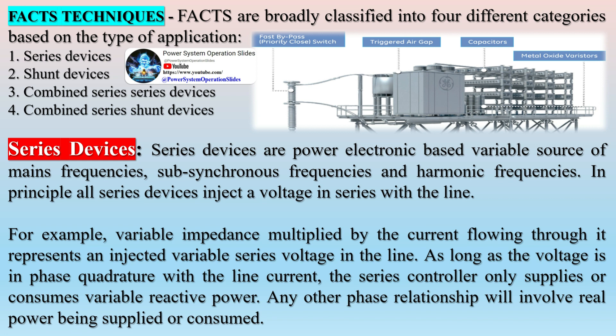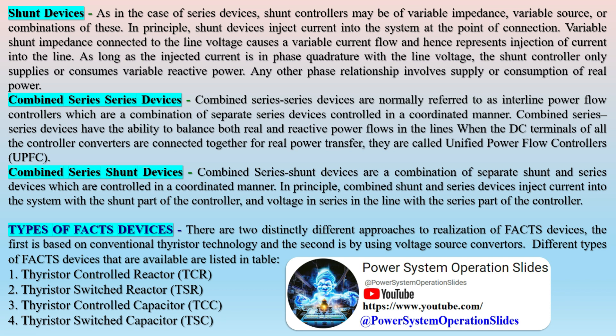Similarly to series devices, shunt controllers may be of variable impedance, variable source, or combinations of these. In principle, shunt devices inject current into the system at the point of connection. Variable shunt impedance connected to the line voltage causes a variable current flow, representing injection of current into the line. As long as the injected current is in phase quadrature with the line voltage, the shunt controller only supplies or consumes variable reactive power; any other phase relationship involves supply or consumption of real power.